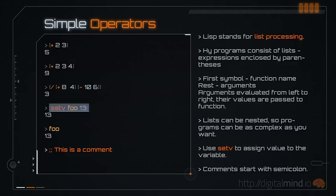If you want to assign a value to a variable, you can use setv. Comments in Hi begin with a semicolon. You would usually use 4 semicolons to comment at the beginning of a file, 3 semicolons to comment about a following big block of code, 2 semicolons to comment on code inside functions, and 1 semicolon to create a comment at the end of a line. A clever text editor like Emacs will automatically indent everything for you properly, which is awesome.